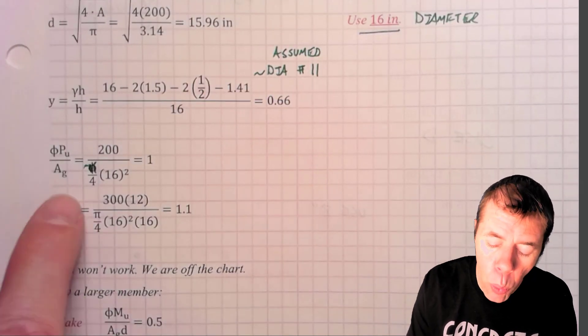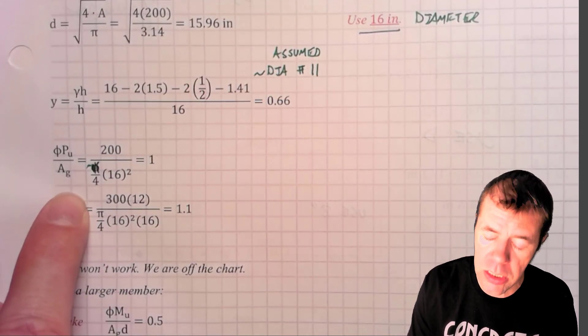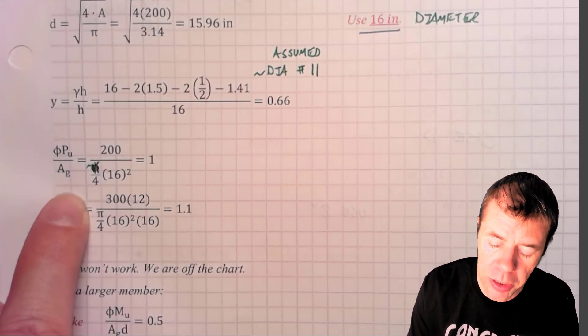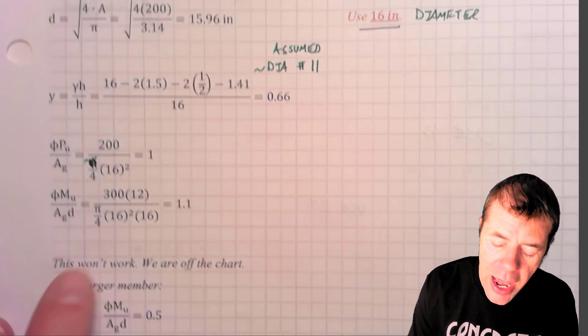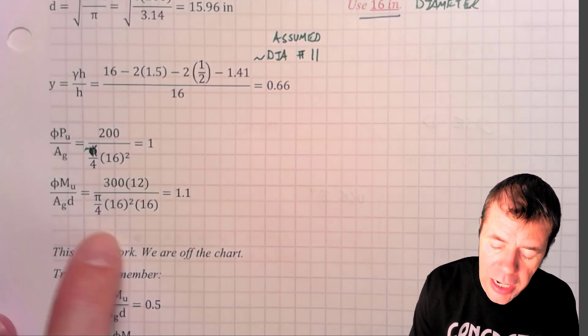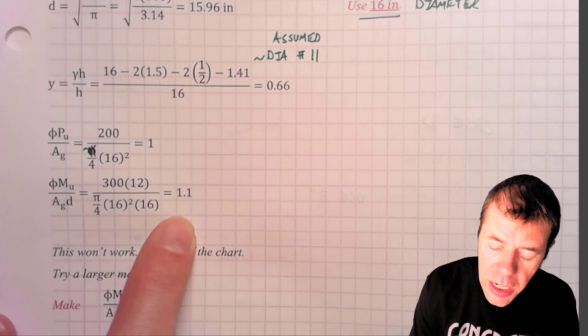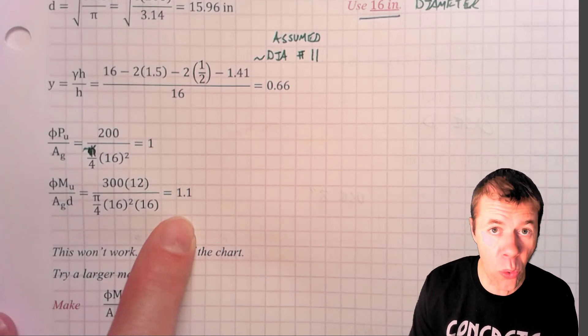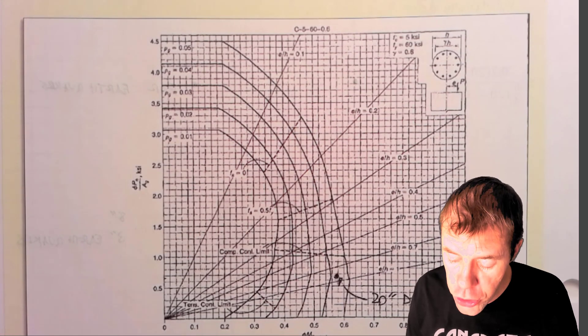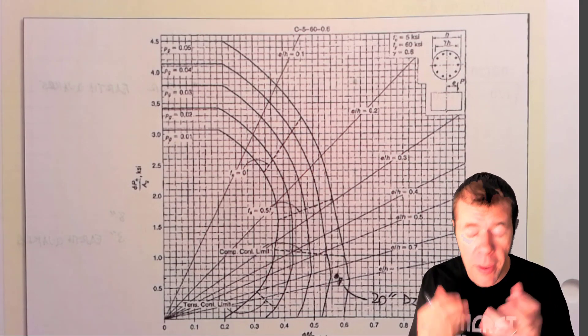Now, what I've got to do is find my y value on my non-dimensional interaction diagram. I plug in here and get one. I find my x value. I plug in here and I get 1.1. And now, I get to go to the interaction diagram. So, you have to search through the interaction diagrams and find the one that best fits for you.